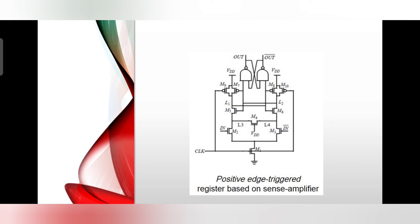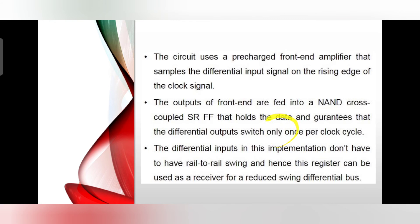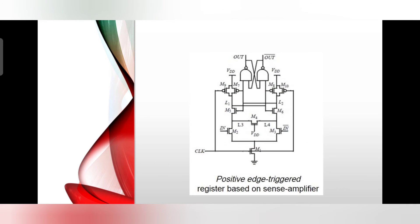On the rising edge of the clock, the evaluate transistor turns on and the differential input pair M2 and M3 is enabled. The differential between the input signals is amplified on the output nodes L1 and L2.